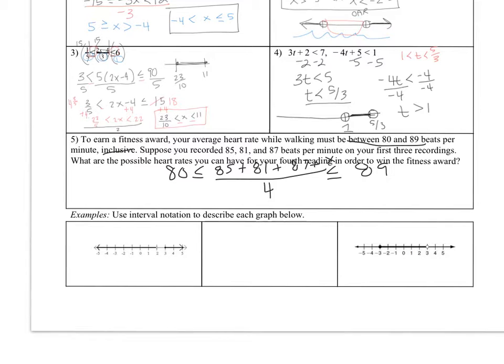So to average something is you add them all up and divide by the number of numbers that you have. So now I'm going to multiply both sides by 4 or all three parts by 4 in order to get rid of the fraction. So 4 times 80 is 320. Now I'm going to add up 85 plus 81 plus 87 and I get 253. So it's 253 plus x is less than or equal to 89 times 4, which is 356. So if I subtract 253 from each part, I will get 103 at the high end. So I could still get a heart rate of 103 on my last one and my lowest heart rate that I could get is 67. So my answer ends up being in between.